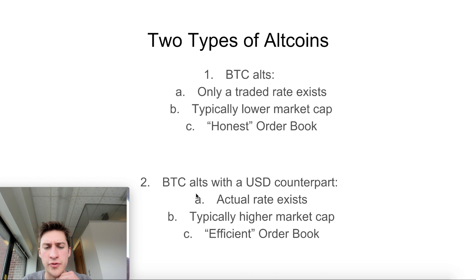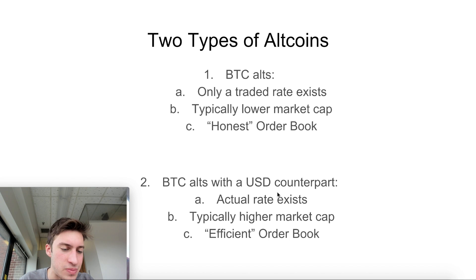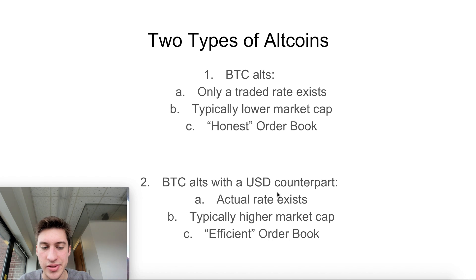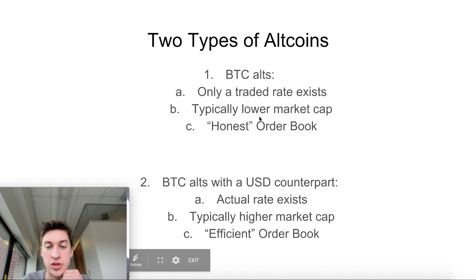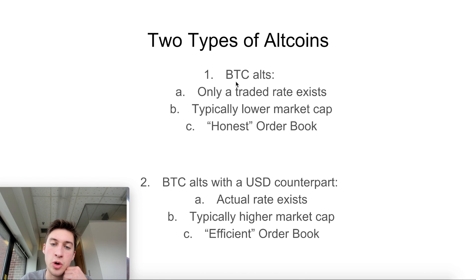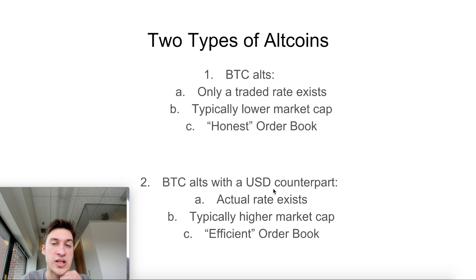Then you have coins that also have USD counterparts, like LTC/BTC and XRP/BTC, because they also have LTC/USD and XRP/USD. The behavior of these kinds of coins is going to be a little bit different. When you trade Bitcoin alts, you need to first gauge whether it's only traded to Bitcoin or if it's also traded to the US dollar, because that is going to impact the market significantly.